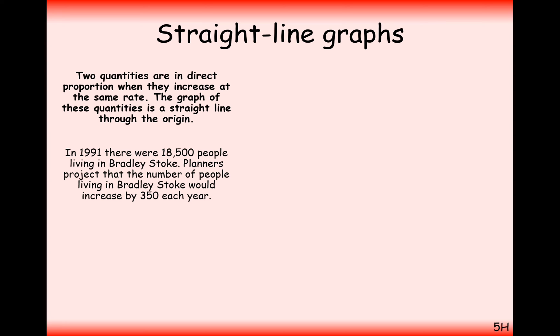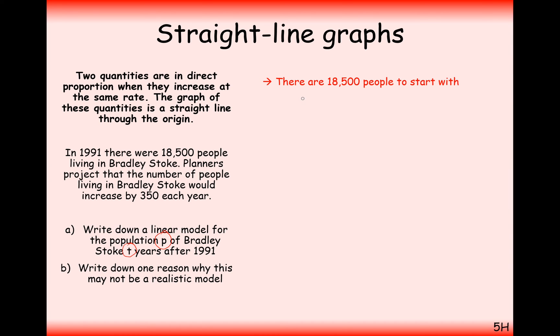Okay, another question for you here. In 1991, there were 18,500 people living in Bradley Stoke. Planners projected that numbers living in Bradley Stoke would increase by 350 a year. Write down a linear model for the population P of Bradley Stoke t years after 1991. Now, we've always written y equals mx plus c for our straight lines here, but it's really important that you include the letters that they give you in the context of your question.